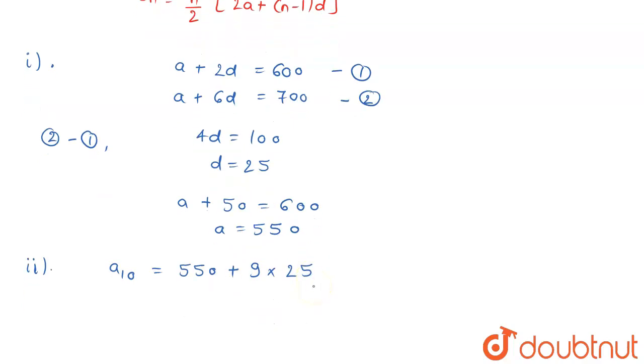So from here you can say it will be 550 plus 225 or in other words you can write it down as 775. In the tenth year this is going to be the production.